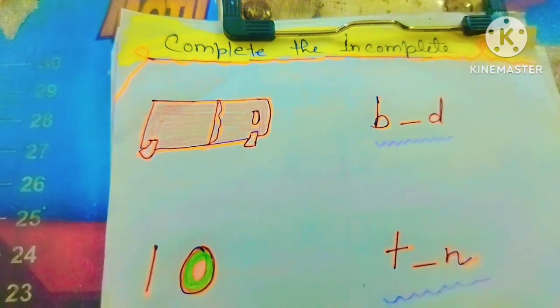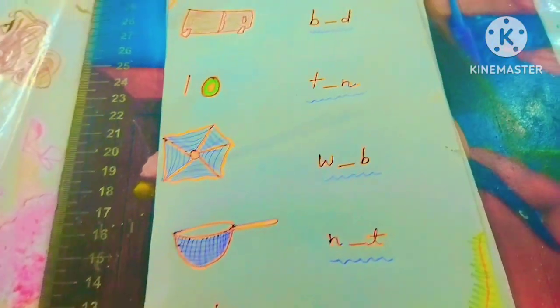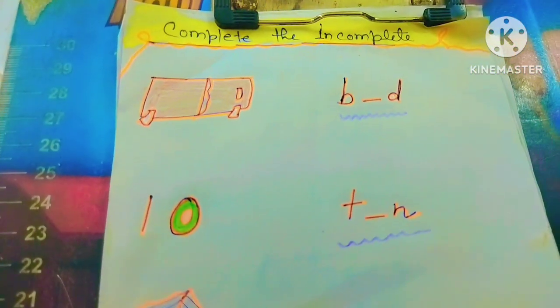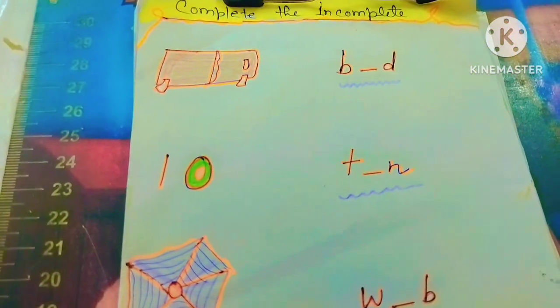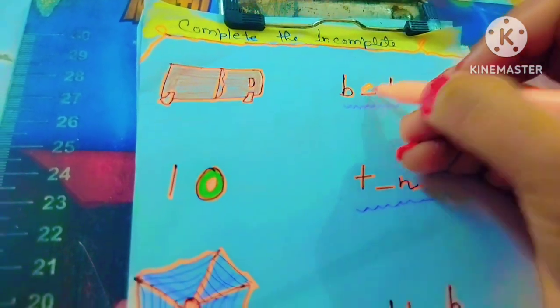Next one is complete the incomplete words. Here incomplete words are there, the child has to complete it. So as you can see here, next one, first is bed. So B, E, D - Bed.